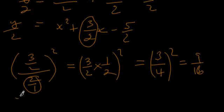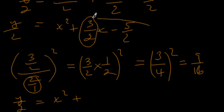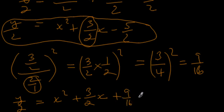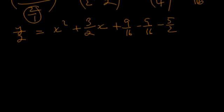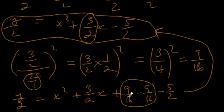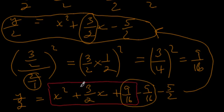Now we take our equation with y over 2, x squared, and 3 halves x, and we're going to add 9 sixteenths and subtract 9 sixteenths. You might ask why we're doing this — it looks pretty complicated. But if you compare this expression with the previous one, everything is the same except we've added and subtracted the same value, so we've really added nothing to the right-hand side, since 9 sixteenths minus 9 sixteenths equals zero. What this allows us to do is write the first three terms as a perfect square.